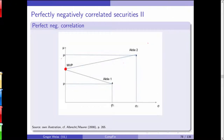We only consider portfolios above the minimum variance portfolio. A portfolio below it is inefficient — it has the same risk as another but delivers a lower mean return. So we only consider the upper half of the portfolio frontier, sometimes referred to as the upper eggshell.